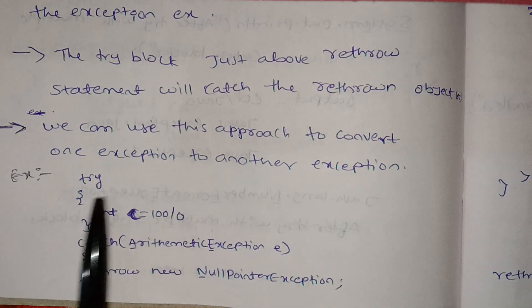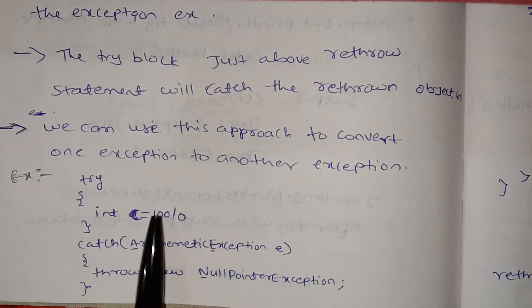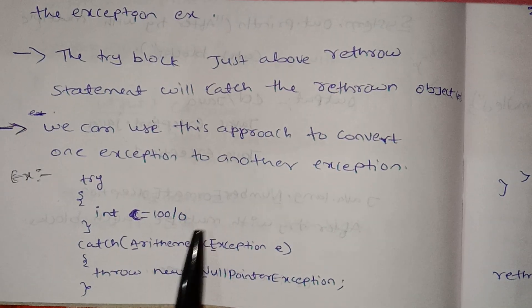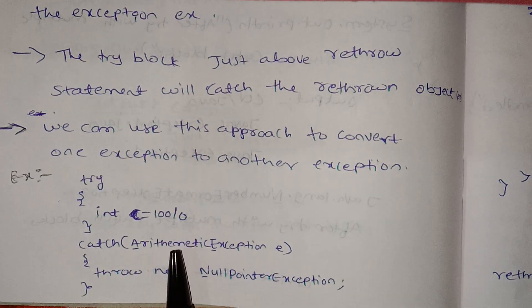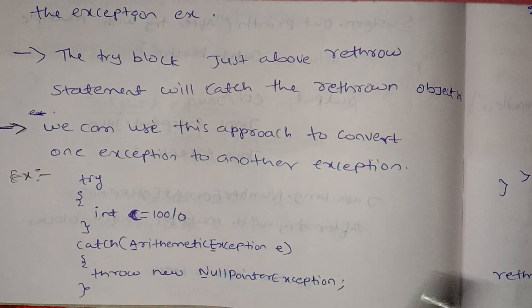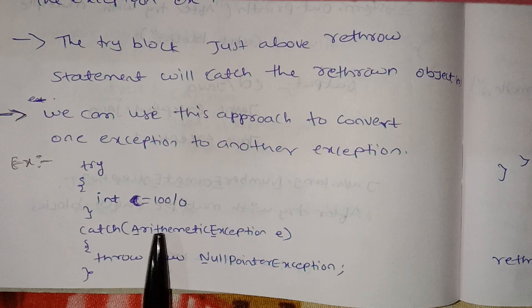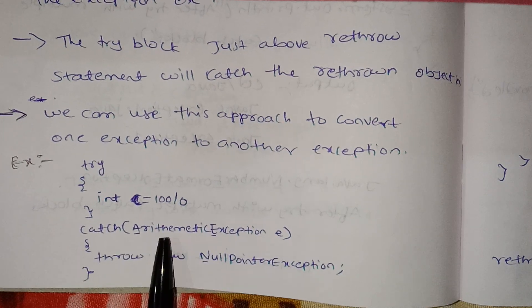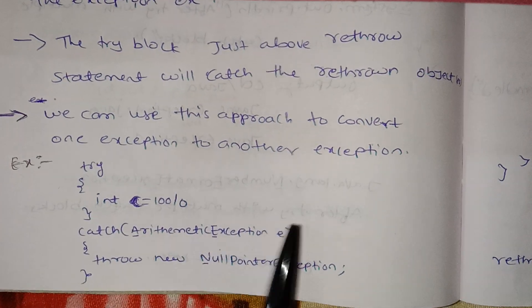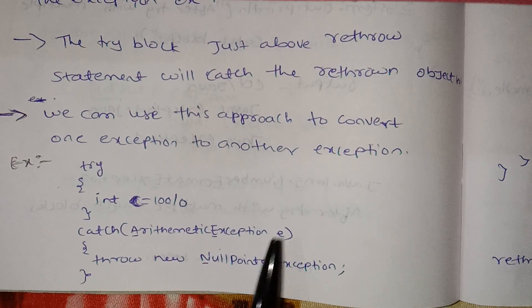In this try block we can write it. Integer c is equal to 100 divided by 0. If it's divisible by 0, we can write it as an arithmetic exception.